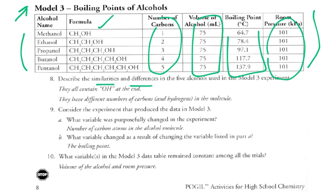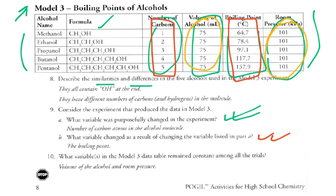The question here was, describe the similarities and differences in the five alcohols. We look at it and say, well, they have different numbers of carbons. They have different numbers of hydrogens. Similar, they all have one OH. Then they come out and say, what variable was purposefully changed in this experiment? If you look at this, you say, the number of carbons. The experimenter has chosen alcohols with 1, 2, 3, 4, and 5 carbons. Then what variable was changed as a result of changing the variable listed in Part A? If we change the number of carbons, then we're looking at the boiling point. So the boiling point seems to change. What variables remain constant through the whole thing? We can see that the volume that we're using, the room pressure that we're using, those stay constant.